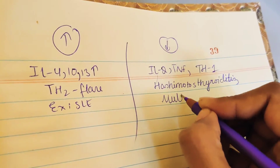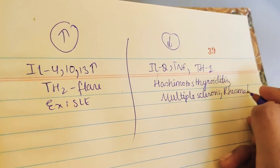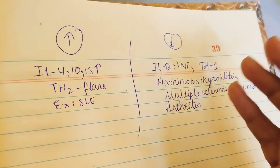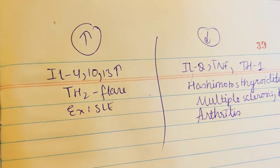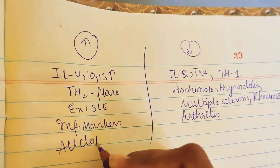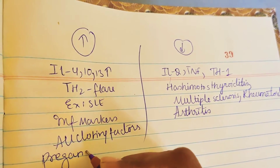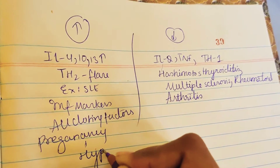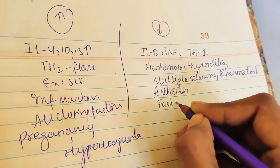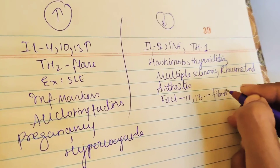TH1-mediated diseases that improve in pregnancy include Hashimoto's thyroiditis, multiple sclerosis, and rheumatoid arthritis. All inflammatory markers increase. All clotting factors increase, and importantly, pregnancy is a hypercoagulable state. Factors 11 and 13 decrease — factor 13 is the fibrin stabilizing factor.